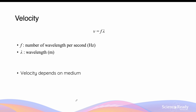Finally, the velocity of a wave is simply defined as the speed at which it travels, or in other words, the speed at which energy is transferred from one location to another. The speed of a wave is calculated by multiplying its frequency in hertz by its wavelength in meters. This makes sense because wavelength is the distance of one cycle of the wave, and frequency is the number of wavelengths per second — so multiplying them gives meters per second, which is the unit for velocity.